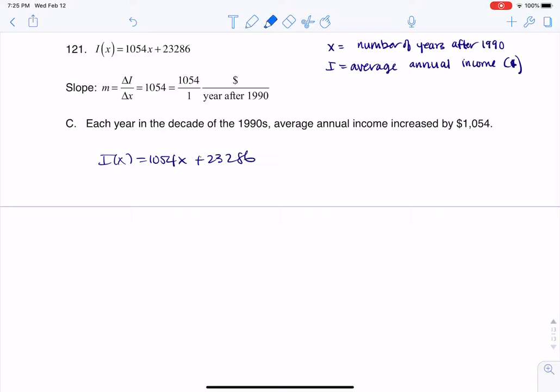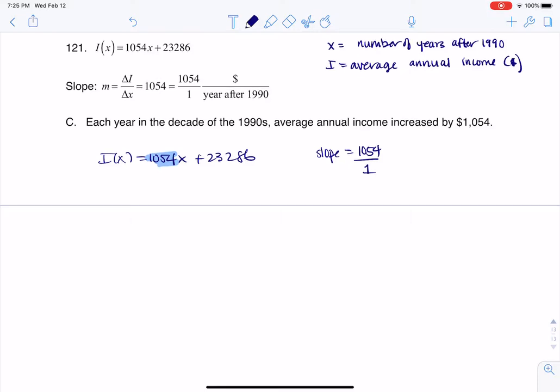This number right here is your slope, 1054. So if my slope is 1054, I can write that as a unit ratio, 1054 over 1. Now, slopes are always change in Y over change in X.